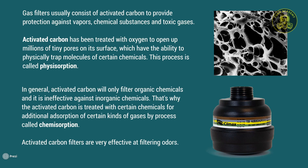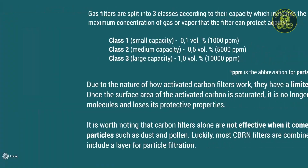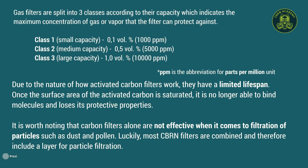Activated carbon filters are very effective at filtering odours. Every industrial gas filter has a specific color code that tells you which harmful gases and vapors the filter protects against. Gas filters are split into three classes according to their capacity, which indicates the maximum concentration of gas or vapour the filter can protect against. Class 1 filters have the smallest capacity while class 3 filters have the largest.